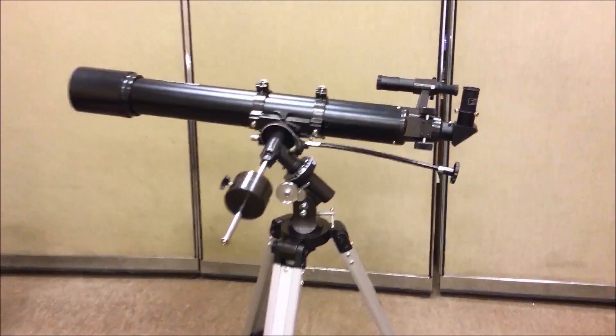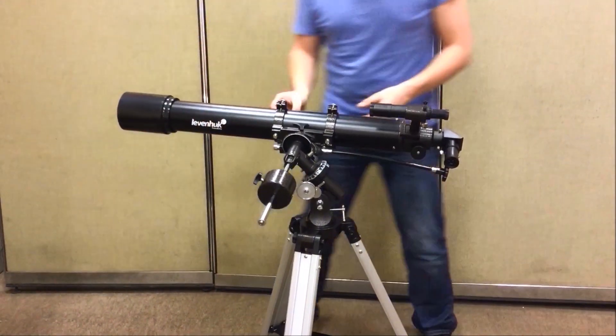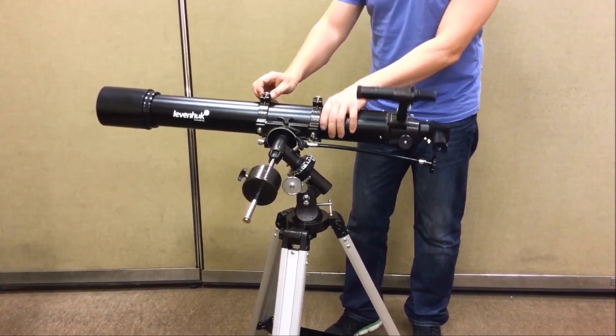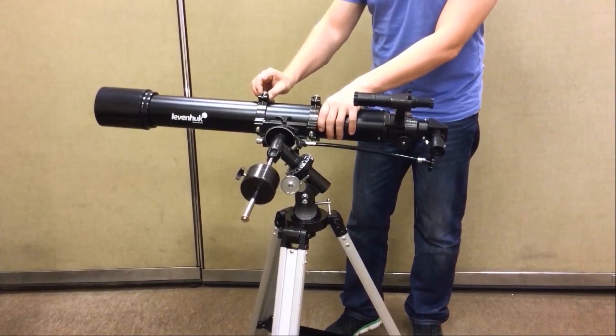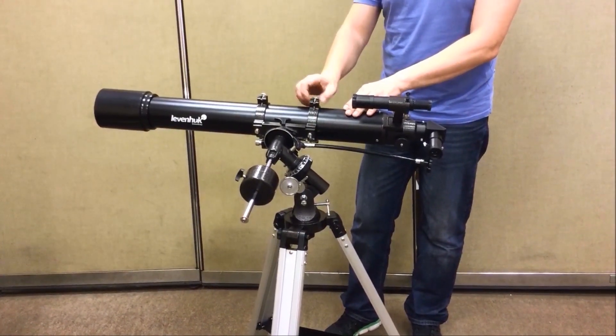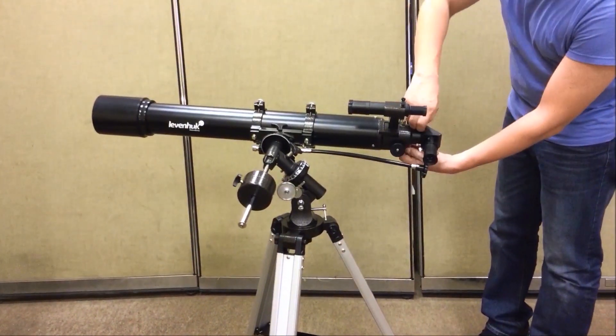The telescope is now assembled. For your convenience, let's loosen the ring clamps and turn the telescope tube so that both focuser knobs are parallel to the ground. Tighten the ring clamps.